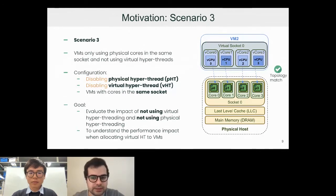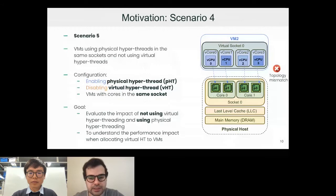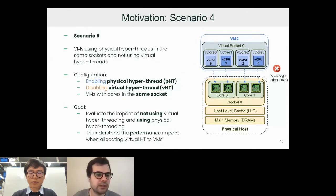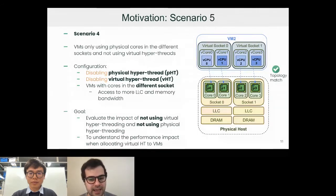The next one is we have hyperthread in the host but the VM topology is not aware about the hyperthread, it's only cores in the VM. It's like a mismatch in the topology. We want to show how the performance will be.